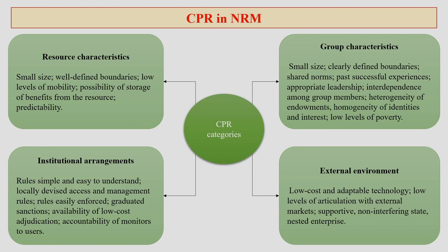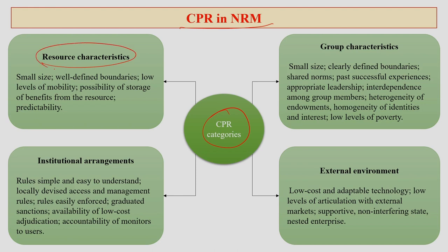Now, common property right categories — there are different types. How they are actually decided and formulated depends on various factors. One is resource characteristics: the size of the resource, boundary, low level of mobility, possibility of storage of benefits from the resource, creditability, and so forth. All the characteristics associated with that particular resource will decide the category of CPR.